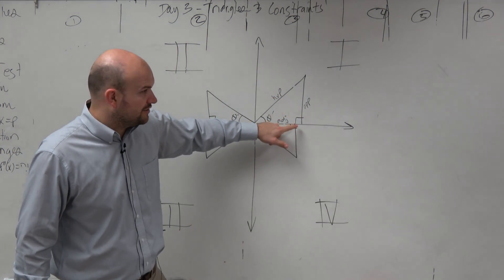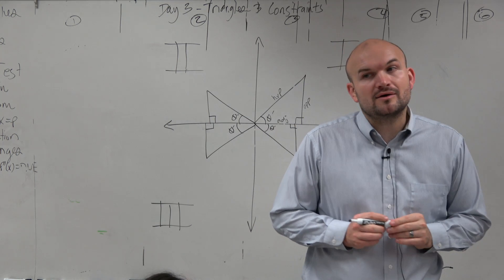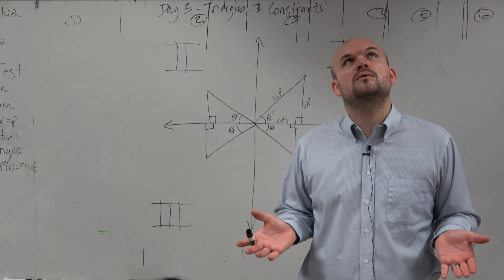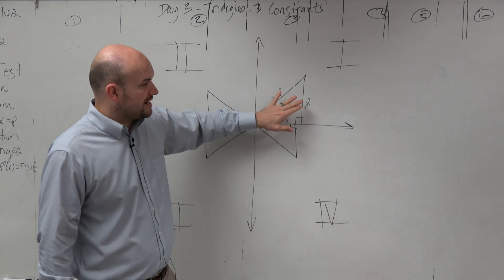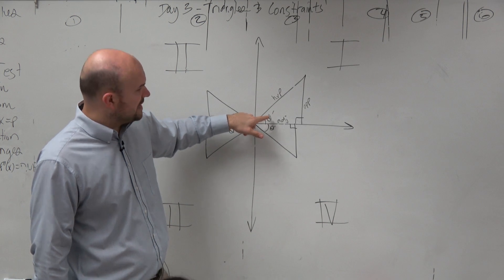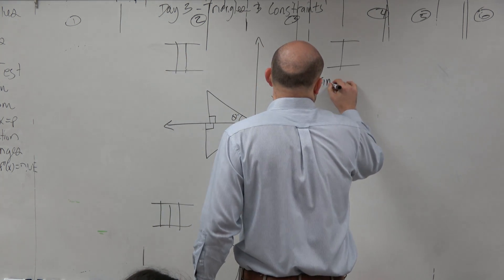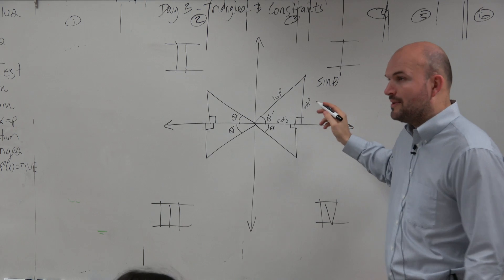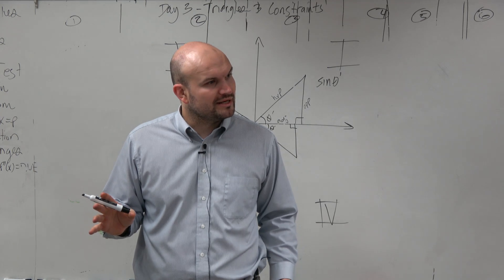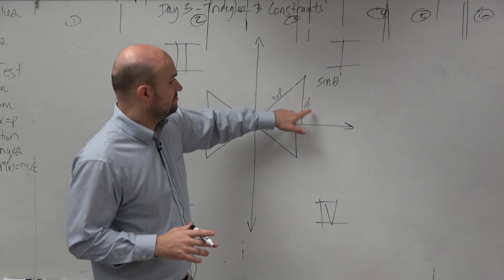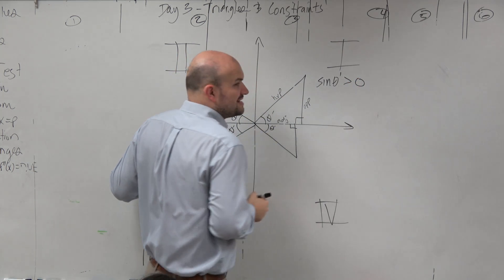The adjacent side is always between the angle and your 90 degrees. Opposite is always directly across, and then your hypotenuse is right there. Now let's think about our six trigonometric functions of this triangle. If we were going to do sine of theta prime, that's just going to be opposite over hypotenuse. Rather than dealing with opposite over hypotenuse, why don't we just look at whether that's going to be positive or negative? Opposite is positive, hypotenuse is positive, so we can write a summary statement: sine of theta is greater than zero.